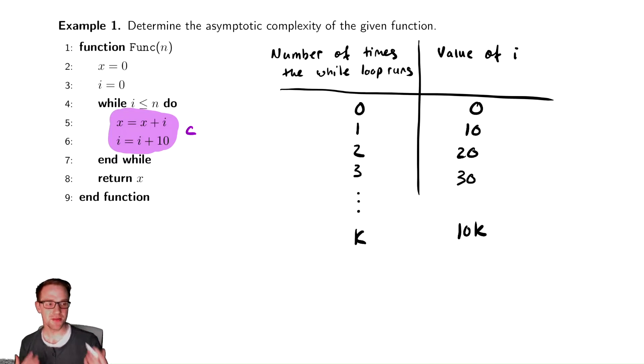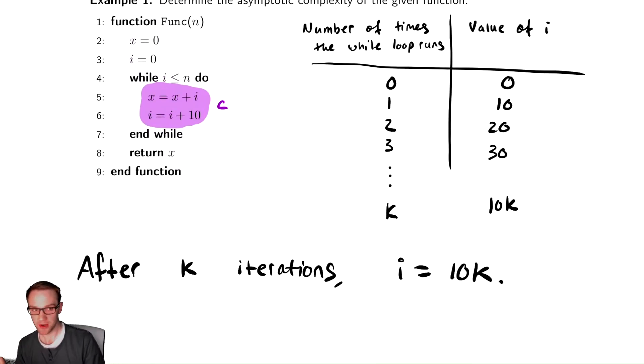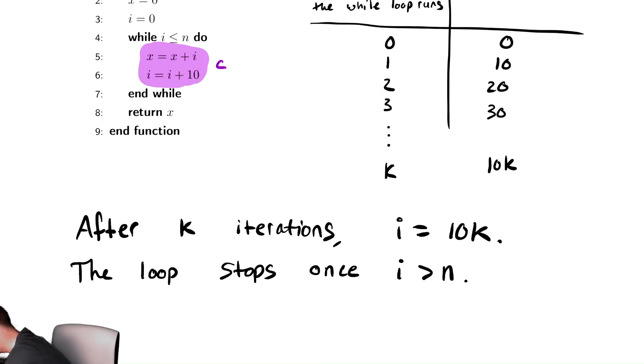And then we want to try to figure out how many times does it run? Well, this gives me a generic expression to describe the value of i after k iterations. So this tells me after k iterations of the while loop, i is equal to 10k. And I also know when the while loop will stop running because the code tells me this runs until i is bigger than n. So the while loop stops, the loop stops once i is bigger than n. That's the opposite of the condition that's here.